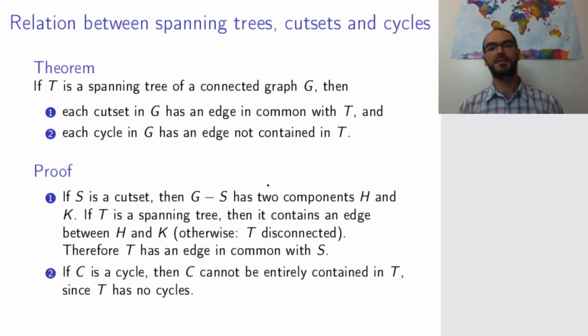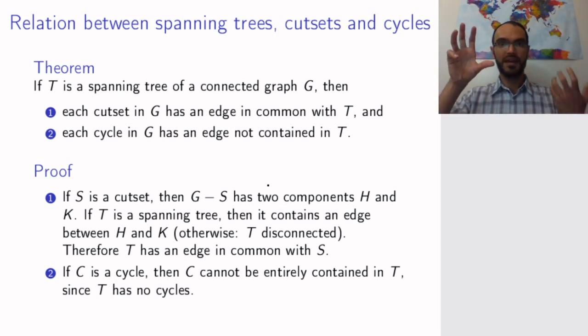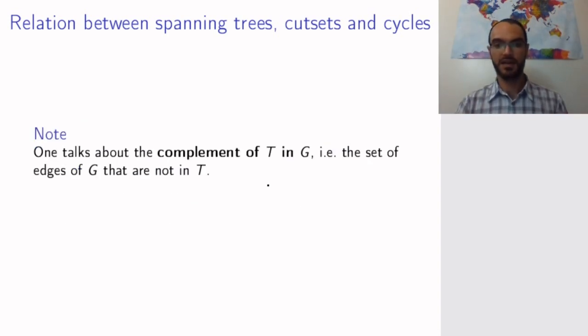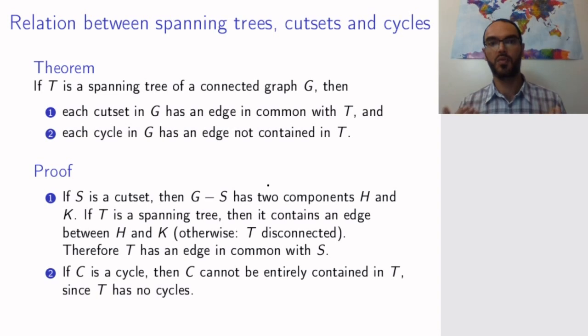The proof of the second statement is much easier, simply because if you have a cycle in your graph, and the cycle is contained entirely in the tree, then you must have a cycle in the tree. But trees by definition have no cycles, so whichever cycle you take cannot entirely be contained in the tree. In other words, it must have one edge that is not in the tree. And this proves number two.